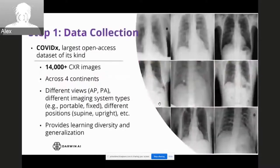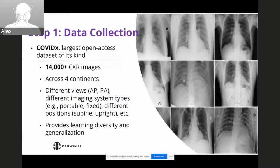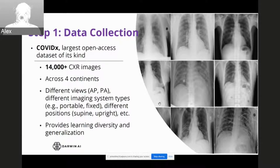In the first step, data collection, we had to build up our dataset in the most comprehensive and diverse manner. We built COVIDX — the largest open access dataset of its kind, with over 14,000 chest X-ray images from individuals across four different continents, with different views, imaging protocols, types of systems both portable and fixed, as well as different positions such as upright and supine. This allows us to build systems that learn from diversity and generalize better.